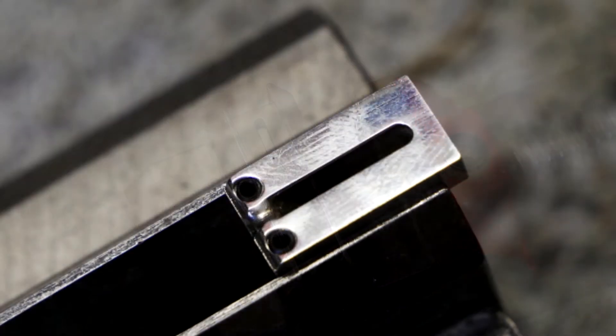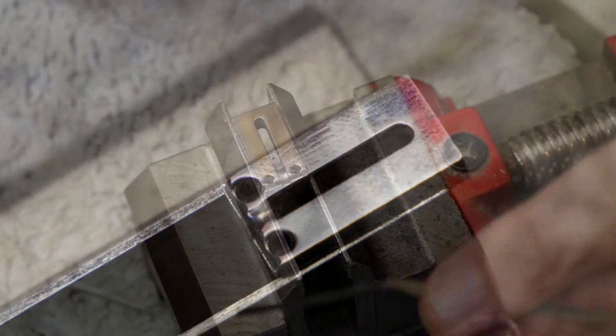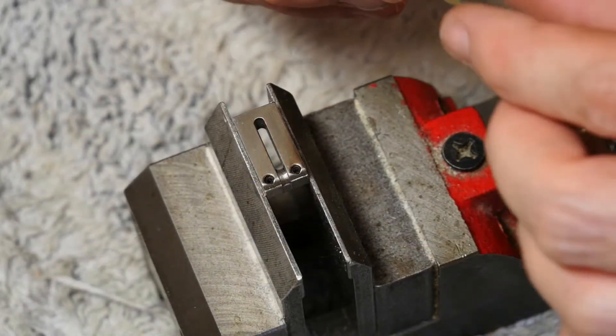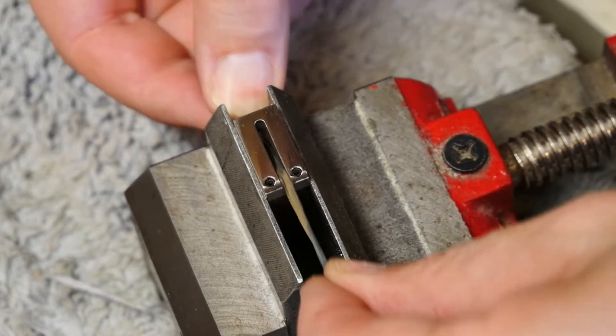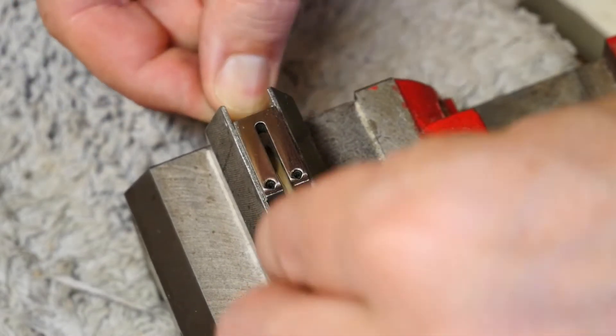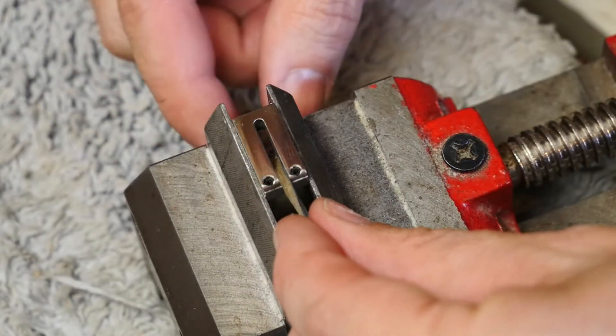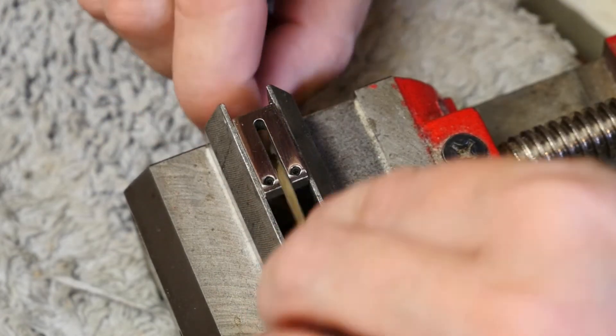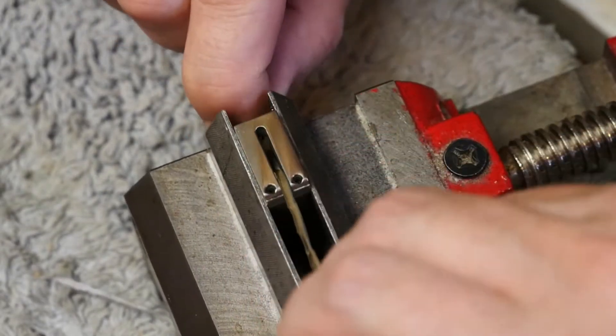I think what we're going to do here is I've got a very thin piece of 600 grit paper and I'm just going to pass it through here. I'm going to replicate the lie of the string as it comes over and down through the loop here, and I'm just going to try and take out as much of that sharpness as I can.